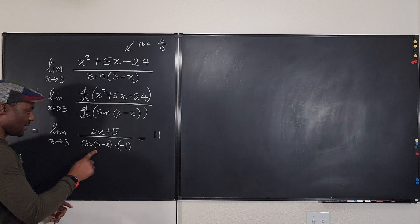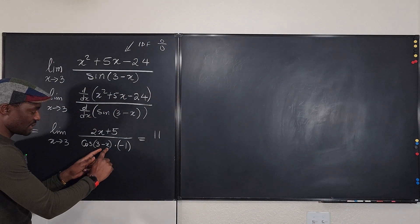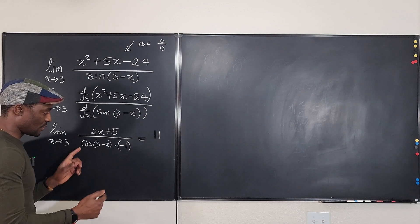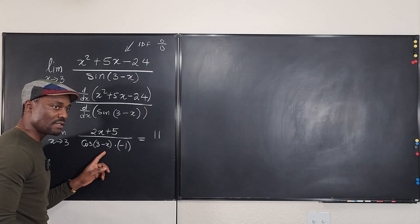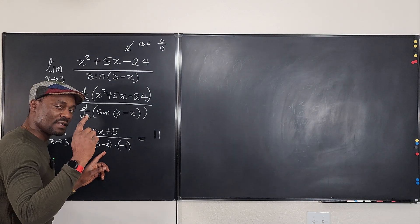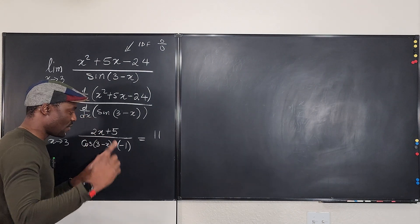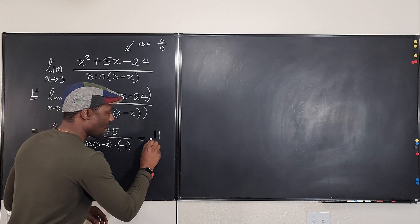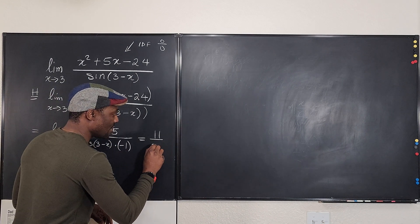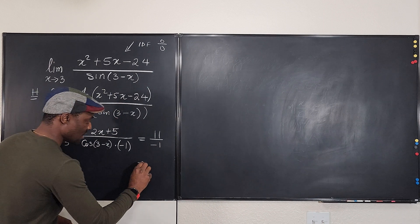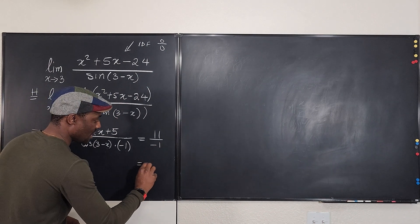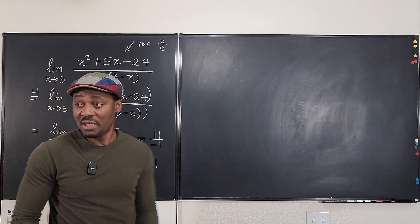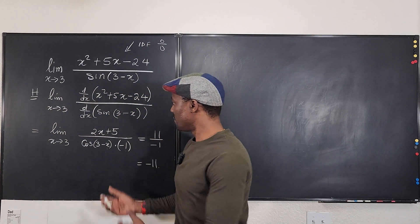Plugging in 3 to the bottom: 3 minus 3 is 0, so cosine of 0 is 1. What is 1 times negative 1? That's negative 1. So our answer is 11 over negative 1, which equals negative 11. That's the limit of this function.